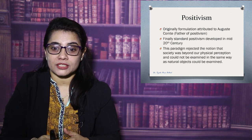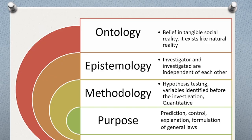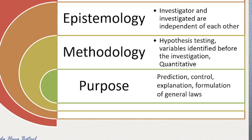In the positivism paradigm, the ontological belief is that social reality exists just like natural reality. Their epistemological concept is that the investigator and the investigated are independent of each other — meaning the researcher and reality do not influence one another. The methodology in this paradigm is quantitative, involving hypothesis testing, variable identification before investigation, and quantitative measures. The purpose is prediction, control over variables, explanation, and formulation of general laws.